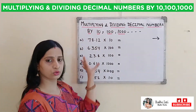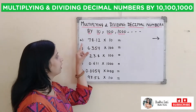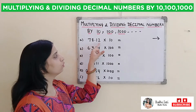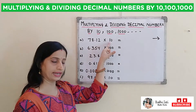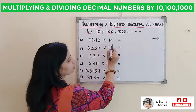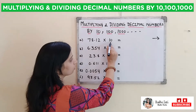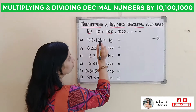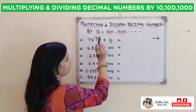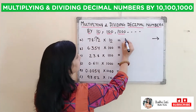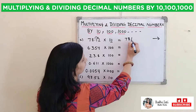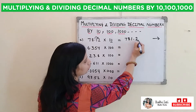Now let's do some questions. The first one is 78.12 multiplied by 10. In 10, there is only one zero. So our decimal will shift to the right hand side by 1 place, and our answer will become 781.2.